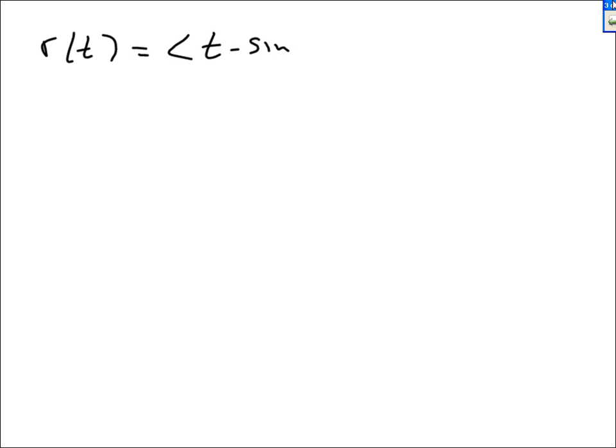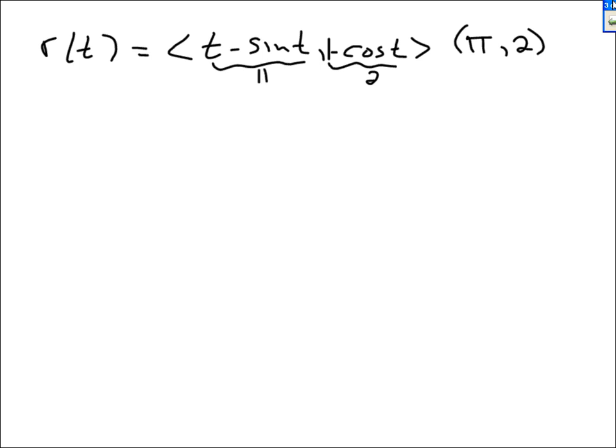I'll give you another r of t with a coordinate point, which is an x-y point, and ask you to find v and a at that particular point. r of t is (t minus sin t, 1 minus cosine of t), and the point is (π, 2). That means the x component should equal π and the y component should equal 2 for some t value.